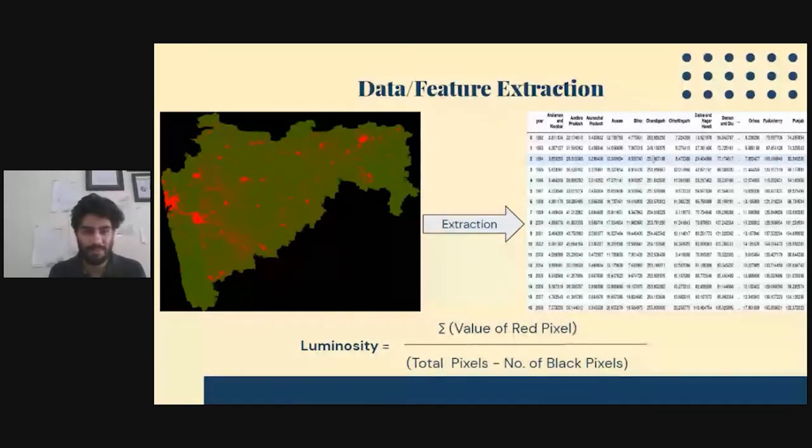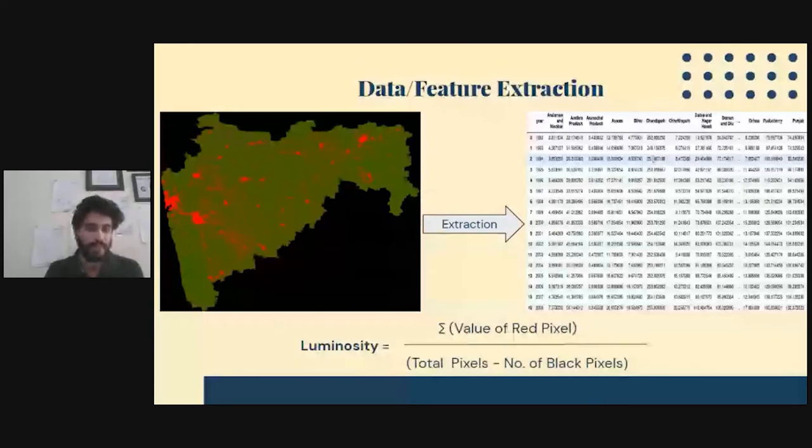Of course, at the risk of belaboring the point, if you need to change states, you don't need to change much, you just need to change that one parameter of your area of interest. We did this for all the states. And now we have CSV data. Now we can actually test our hypothesis. We have the values, we have GDP values separately. And now we can see if there's any correlation behind that. And what we found was actually true. If you look at states like Tamil Nadu or Bihar, there is indeed a positive correlation between luminosity and GDP.